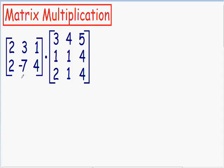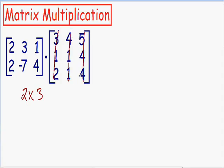Let's take a look at the size of this first matrix. In this first matrix, we have two rows and three columns, so this first matrix is a two by three matrix — two rows by three columns. And if we take a look at the second matrix we are multiplying, we have three rows and three columns, so this second matrix is a three by three matrix.